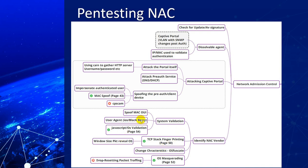You can also manipulate TCP fingerprinting. By changing the packet size, you effectively change the apparent OS and may gain access to the next system. There are also OS masquerading attacks available, such as dropping the reset packet. It's slightly more complicated, but this gives you a theoretical overview of what NAC is and how to approach pentesting a NAC environment.